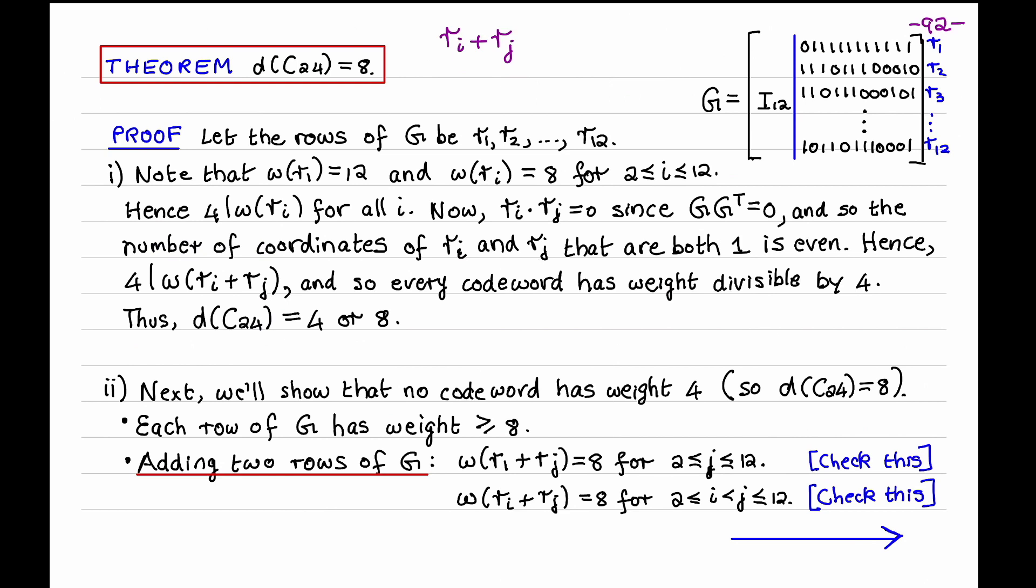So recall that the codewords in C24 can be obtained by taking all possible linear combinations of rows of G. In other words, picking an arbitrary subset of rows of G and adding them together. We've noted that each row of G has weight at least 8. Suppose now that we add two rows of G. If we add the first row of G with any other row of G, the resulting codeword has weight 8. You get weight 2 from the left half of the sum and weight 6 from the right half of the sum.